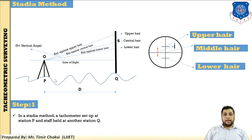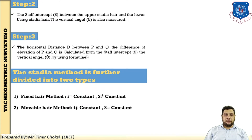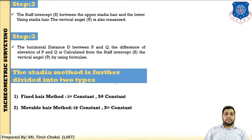First, set up the instrument station at P and arrange the staff at Q. Second step: find the staff intercept S between the upper stadia hair and the lower stadia hair, and also measure the vertical angle theta. The horizontal distance D between P and Q and the difference in elevation between P and Q are calculated from the staff intercept S and vertical angle theta using a modified formula. You find S and theta and put the values into the modified formula to directly find capital D and the difference in elevation between P and Q. This is called the stadia method.